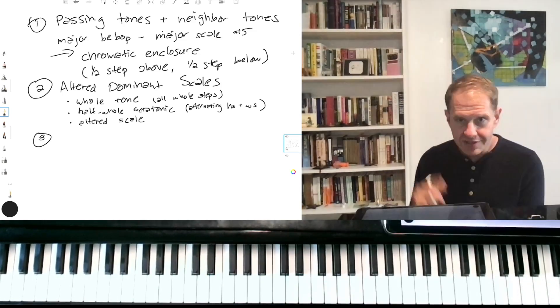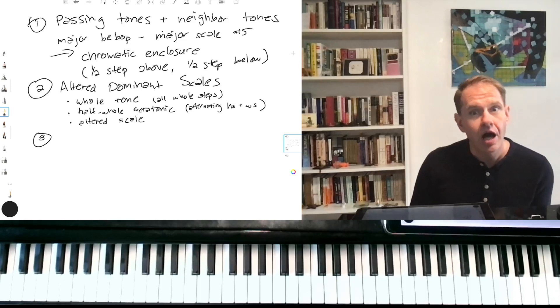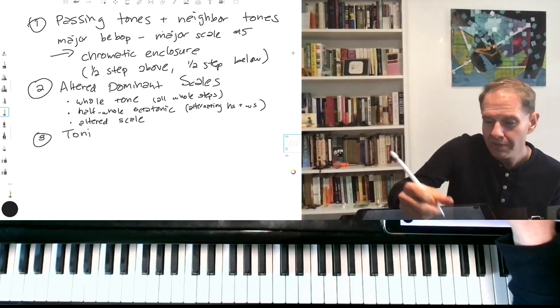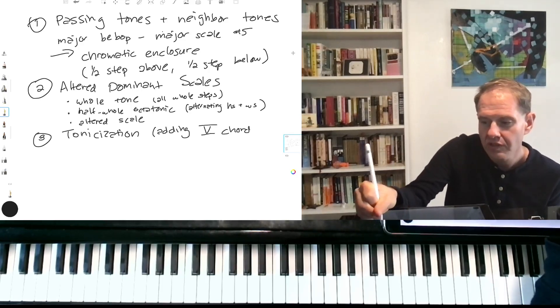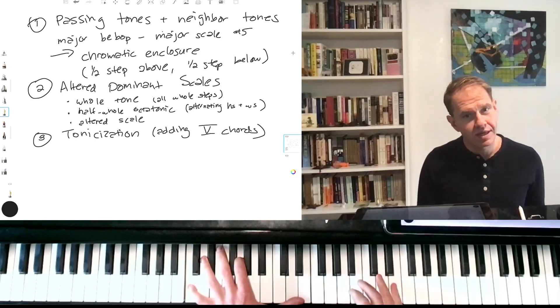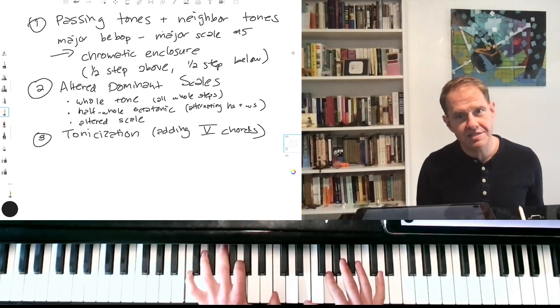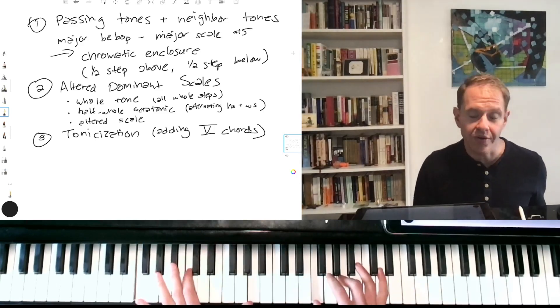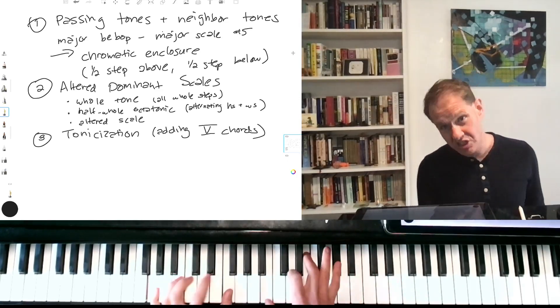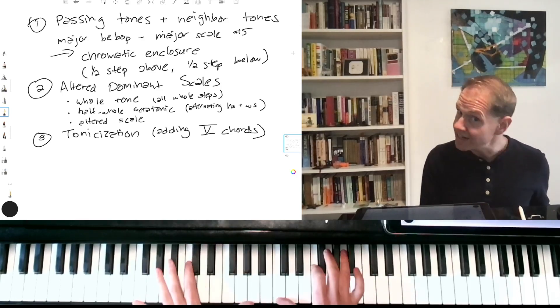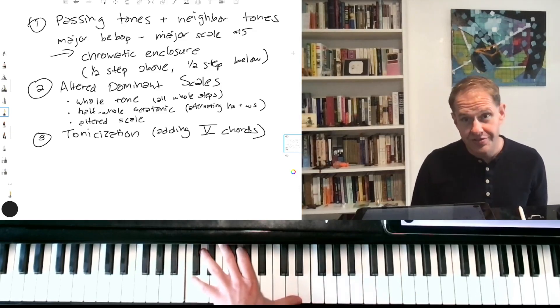And now I only had that one opportunity to include the altered dominant scale, but what jazz musicians do all the time is we add in more dominant chords that we can use these scales even more. And we call this tonicization. Tonicization means adding five chords that aren't necessarily in the original piece. So instead of just holding onto this C major chord and then going to F, I could go C, G7, C, G7, and then C, C7, F. So I could stuff a lot more chords in there.